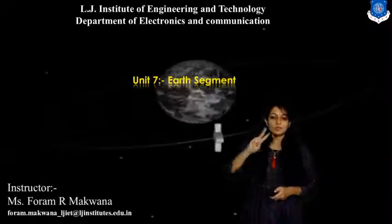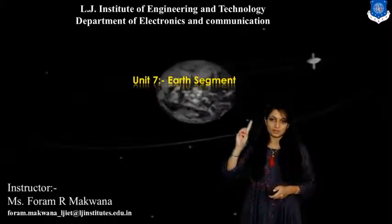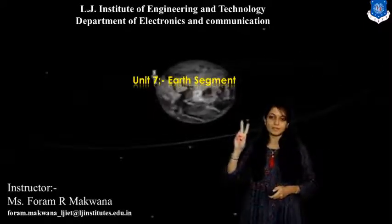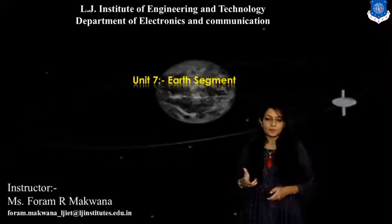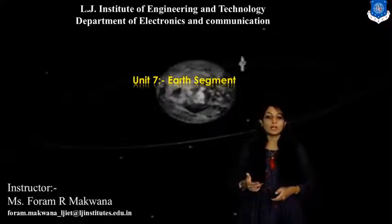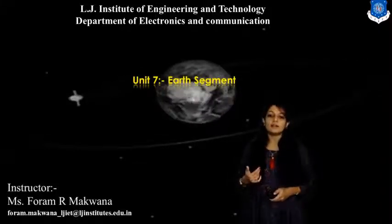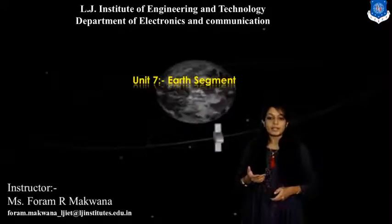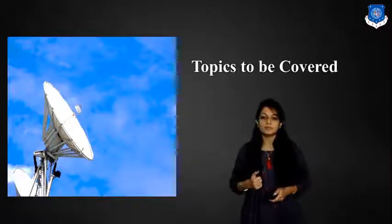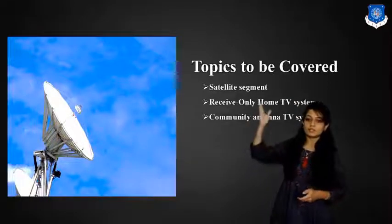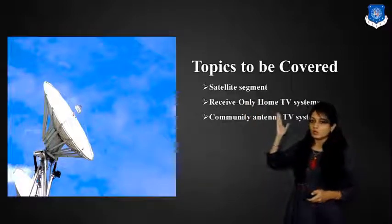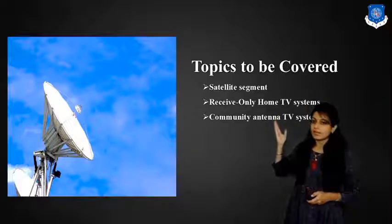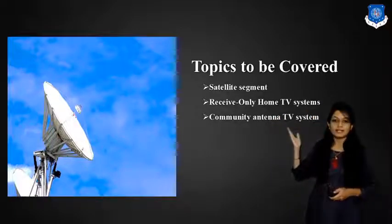Now we know there are basically two types of segments: earth segment and the space segment. The space segment includes the satellite, and the earth segment includes ground equipment like transmitting antenna, receiving antenna, telemetry and command systems. In chapter number 7 we are going to study the different satellite segments.